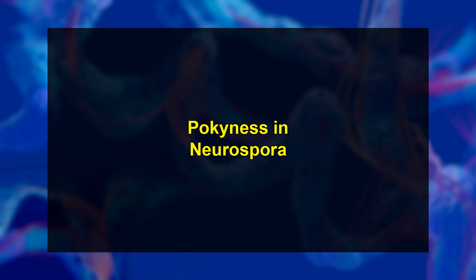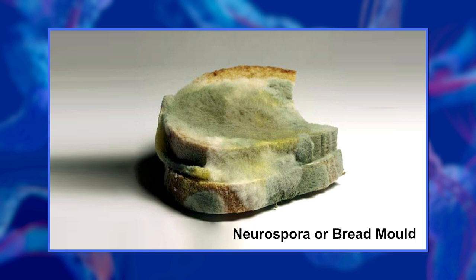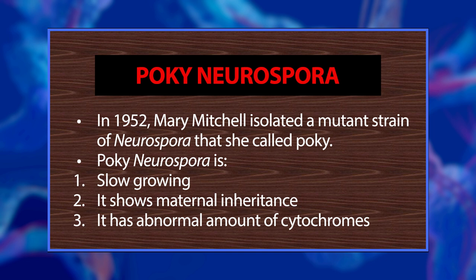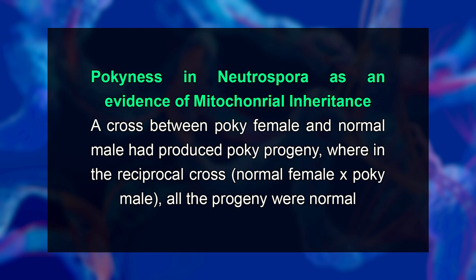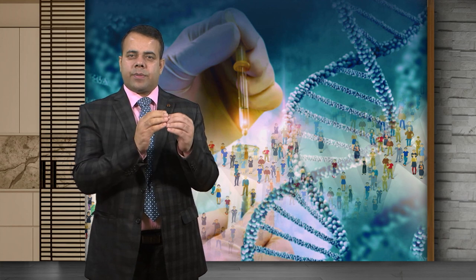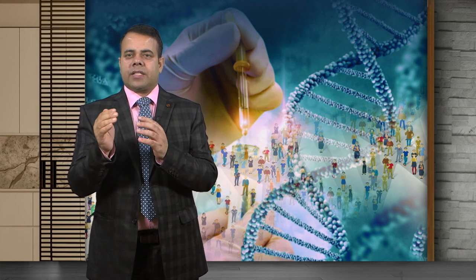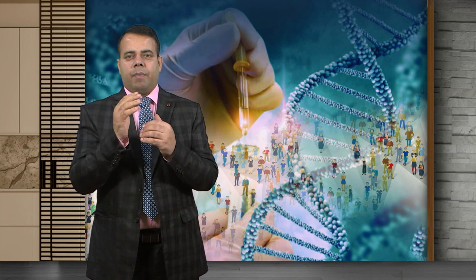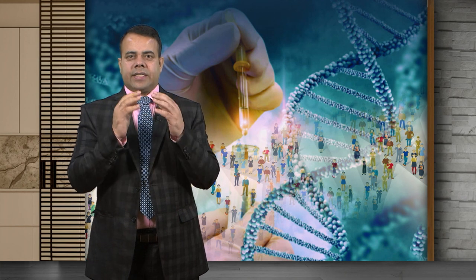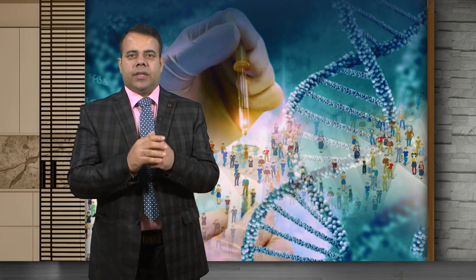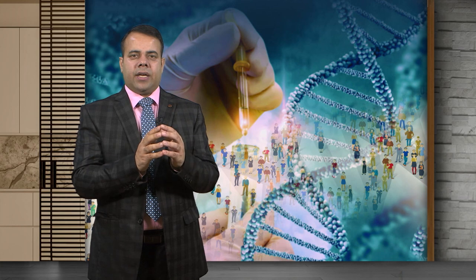Let's now discuss pokiness in Neurospora as a mitochondrial inheritance example. Neurospora, a bread mold, has two types of strains: wild and pokey. The wild strain has normal growth and the mutant pokey strain has very slow growth. A cross between a pokey female and a normal male produced pokey progeny, whereas in the reciprocal cross — normal female versus pokey male — all progeny were normal. This suggests the presence of cytoplasmic inheritance because the only difference between the reciprocal crosses was in the contribution of cytoplasm. Many other cytoplasmic genotypes were discovered in fungi that were slow growing, and in such mutants, mitochondrial cytochrome content was altered, indicating the involvement of mitochondrial DNA.